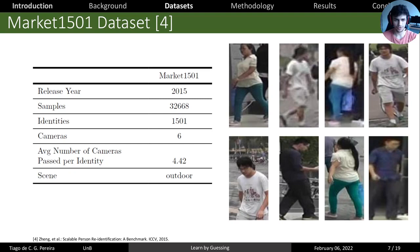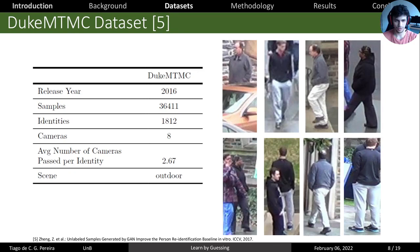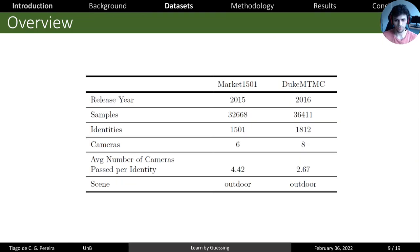For datasets, we choose to use the Market 1501 dataset and the Duke MTMC dataset. They are a good pair of datasets to use in this domain adaptation scenario, because both have sort of the same amount of images and identities, cameras, and also they both are from an outdoor scene, so they have a similar composition, and that's good to analyze our results.